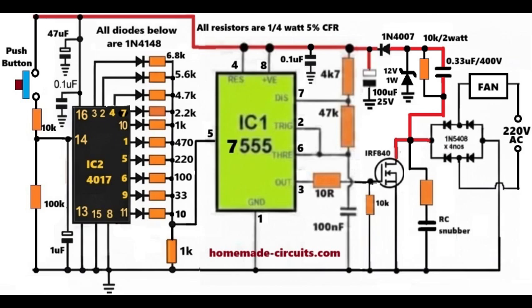Now let us move to the diode and resistor network. Each output of the 4017 passes through a 1N4148 diode for isolation, and then through a resistor.